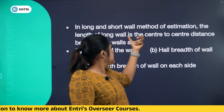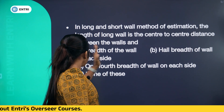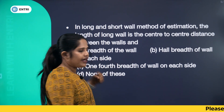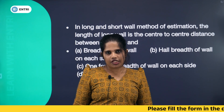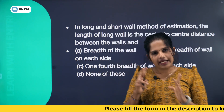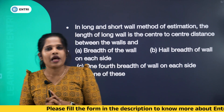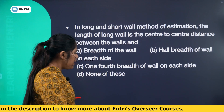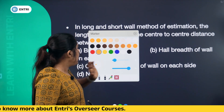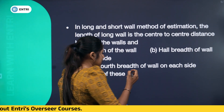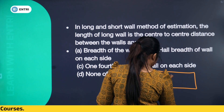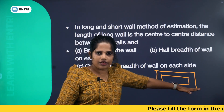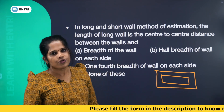The next question: the length of the long wall is — options are: center-to-center distance between the walls and the breadth of wall on each side; half breadth of wall on each side; one-fourth breadth of wall on each side; or none of these. This is a question on the method of estimation — the long wall and short wall method.